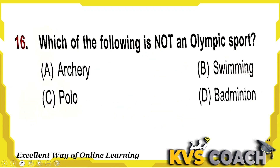Next: which of the following is not an Olympic sport? Archery is an Olympic sport. Swimming is an Olympic sport. Polo is not an Olympic sport — so the right answer is polo. Like polo, cricket and kabaddi are also some sports not included in the Olympics. Badminton is also an Olympic sport. So the non-Olympic sport is option C, polo.